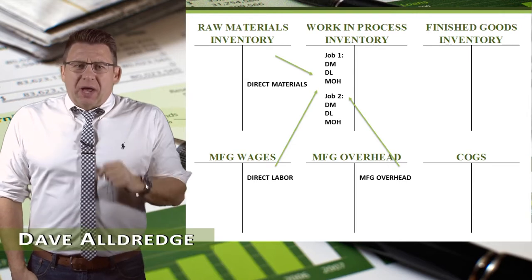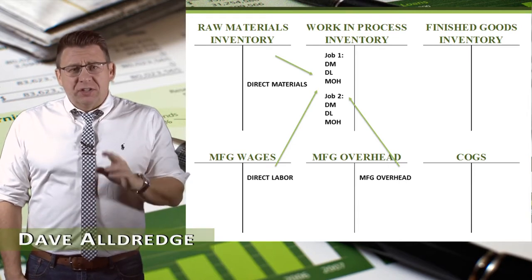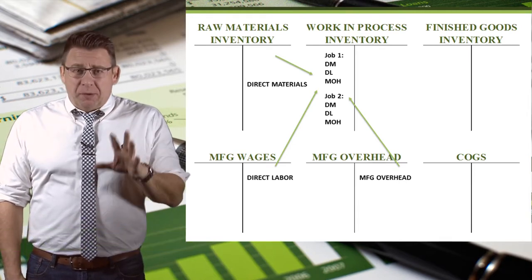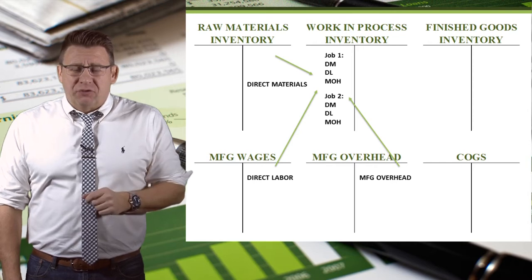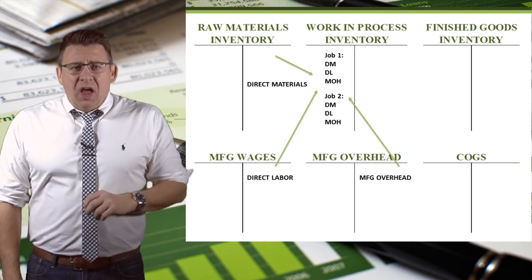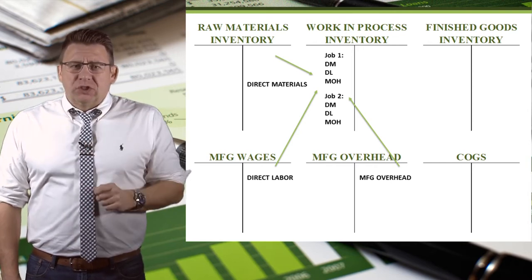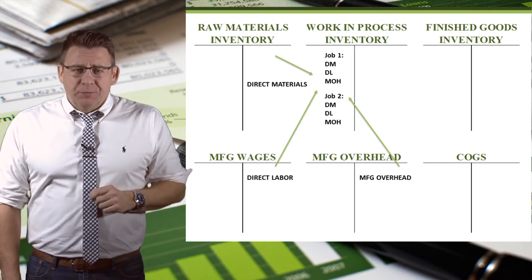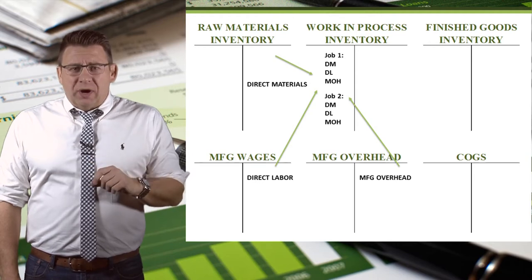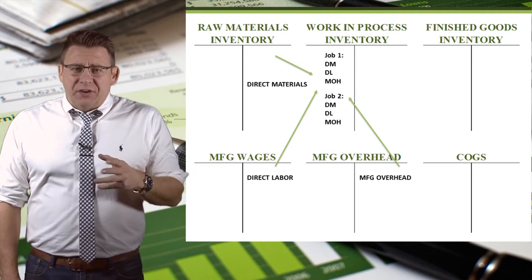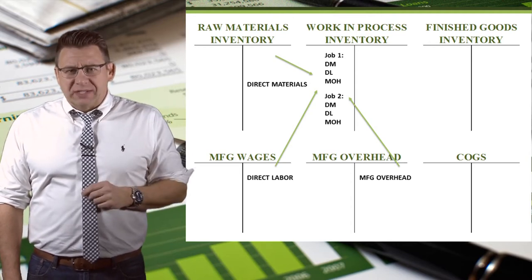Recall in a job costing system, direct materials, direct labor, and applied or estimated manufacturing overhead are posted to individual job records. When the total of all the job records are added together, this represents work in process.